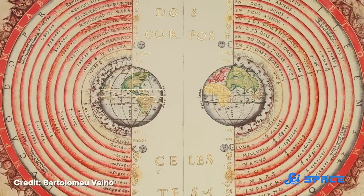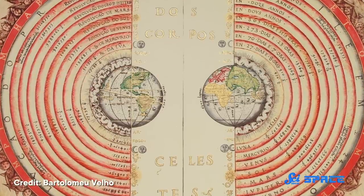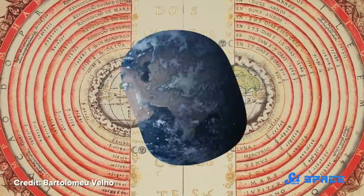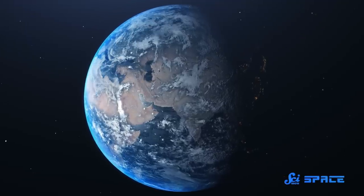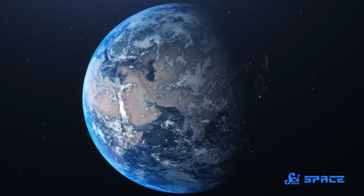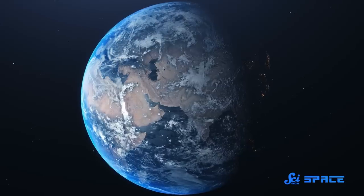But while early astronomers may have thought all this movement meant everything revolved around the Earth, today we know it's mostly thanks to our perch on a moving, spinning, and wobbling Earth that makes the sky seem to move.